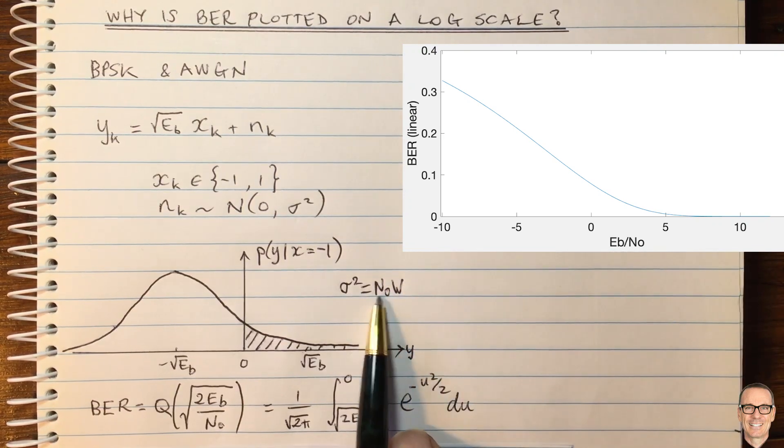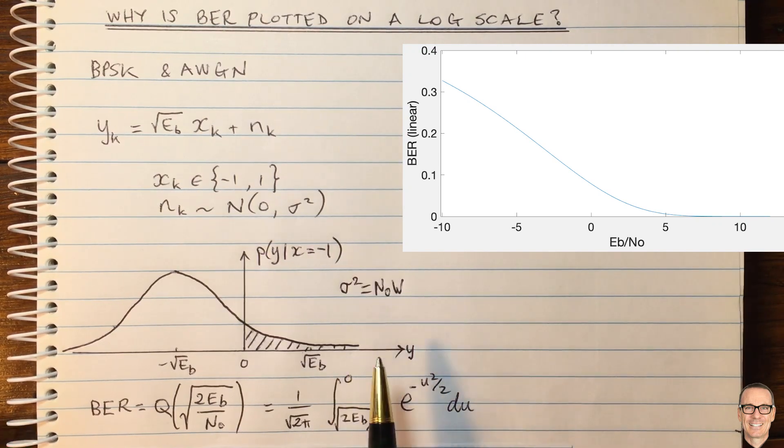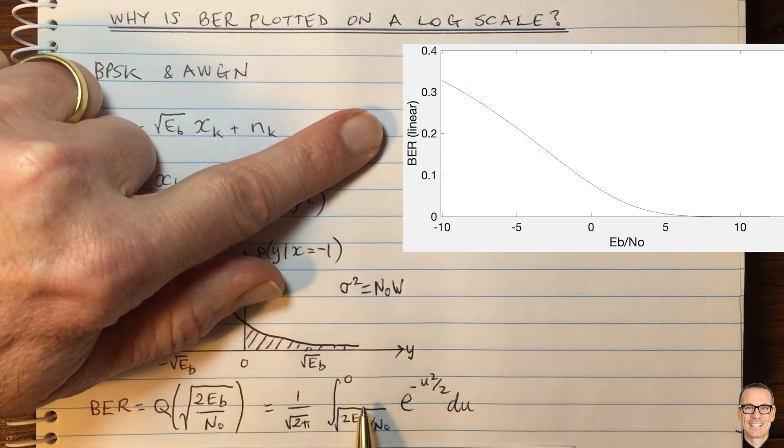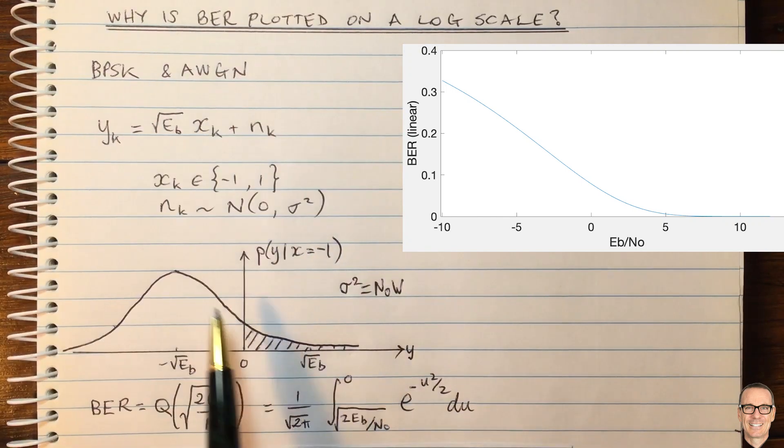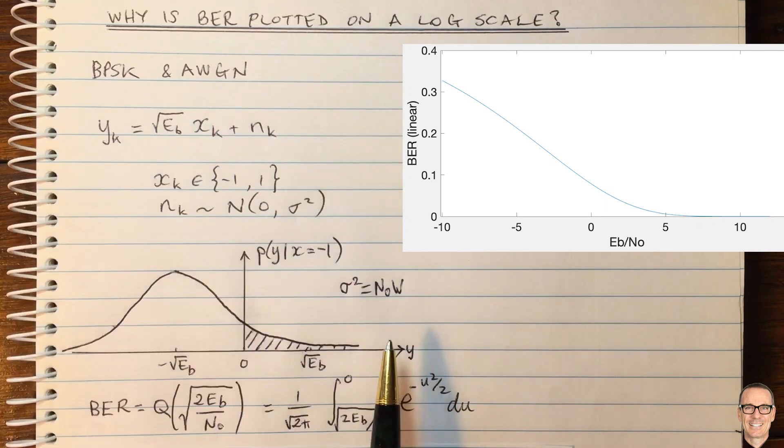And for more on this, you can check out the links in the description below the video where we have videos about noise power. Okay, so if you plot it as a linear function, then you get a shape here. As we might expect, it looks a bit like a Gaussian.